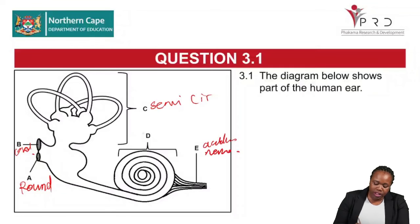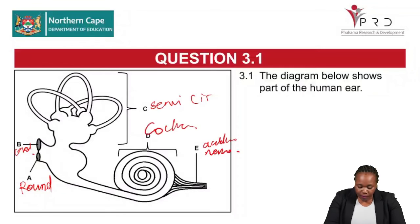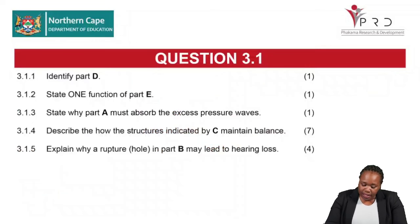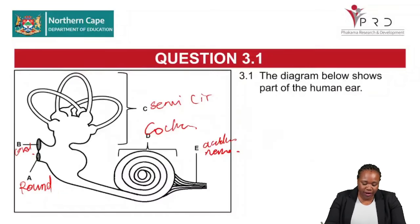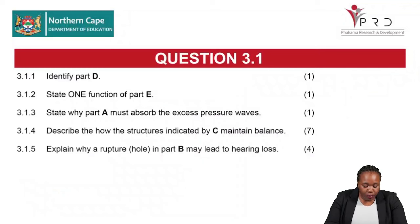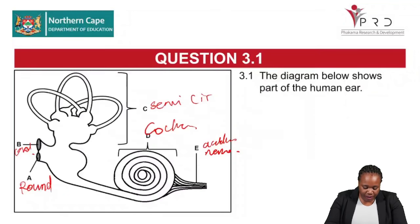Part E is the auditory nerve, and Part D is the cochlea. The diagram below shows parts of the human ear. Question 3.1.1 asks you to identify the parts — Part D is the cochlea. Question 3.1.2 asks you to state one function of Part E, the auditory nerve.